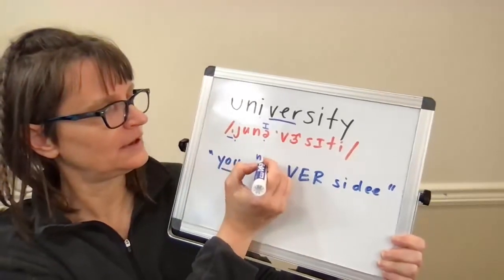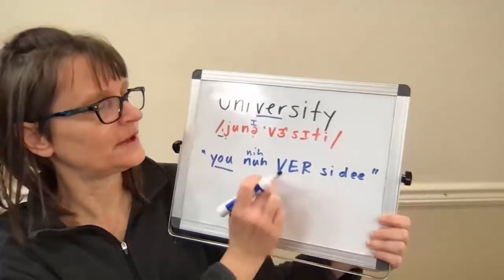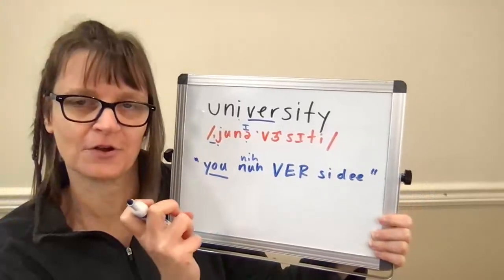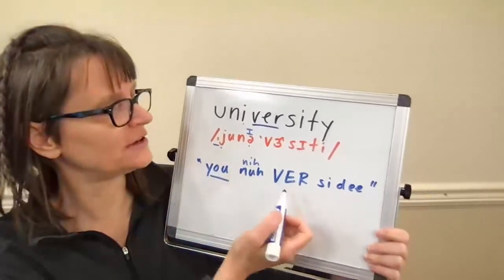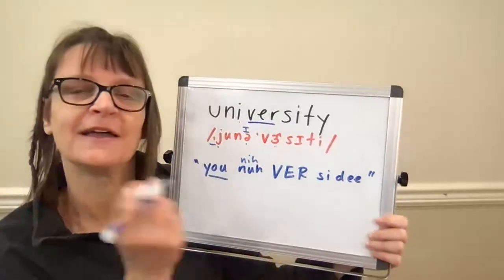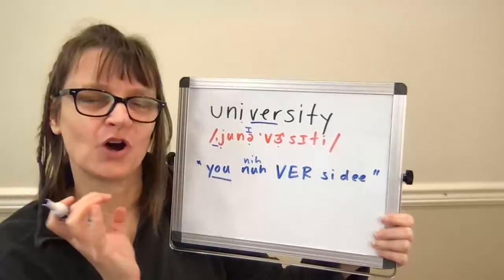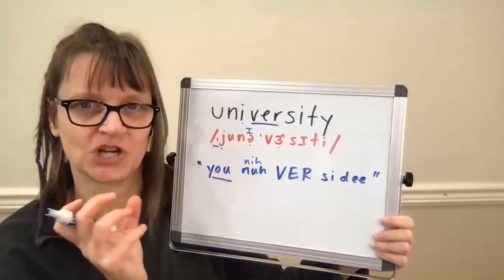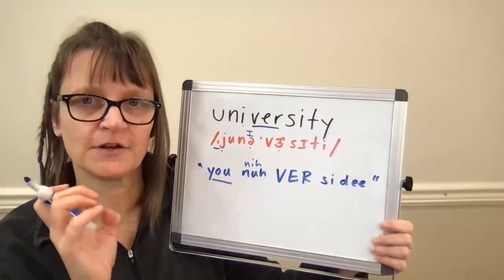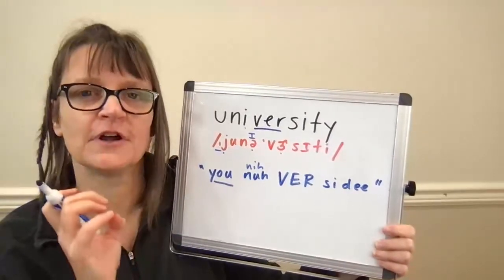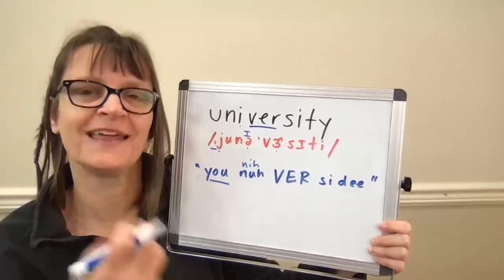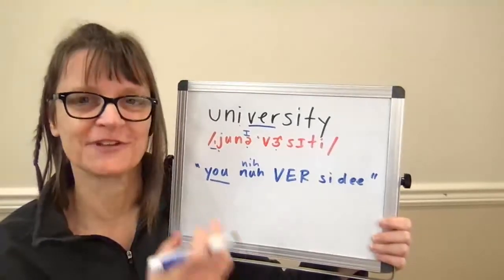In 'university,' we have our 'ver' that has our tight back American R sound. The letters E-R make a stressed UR in this word. You may want to build from that R if that's a challenging part of the word for you — try: 'er,' 'ver,' 'versity,' 'university.' It's also good to start from the stressed syllable; it helps you get the rhythm of the word correct.